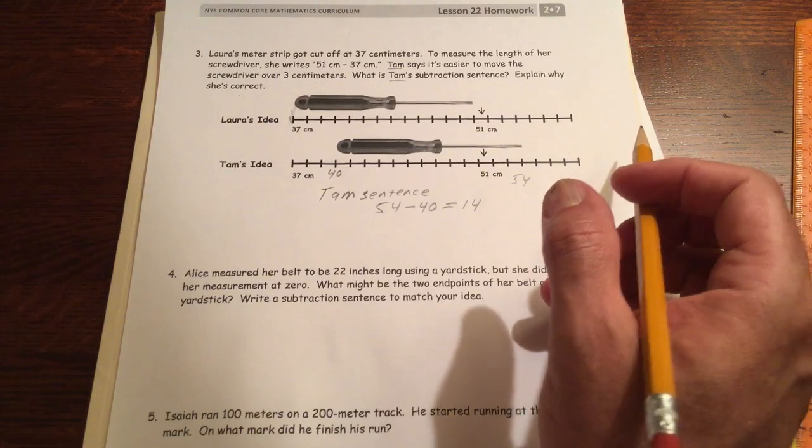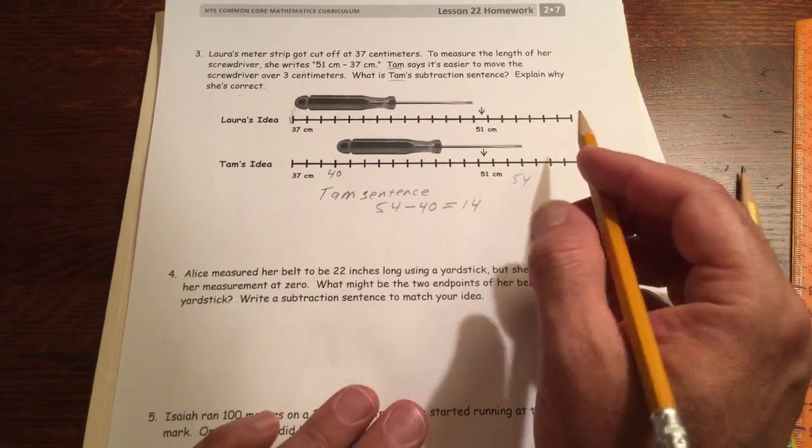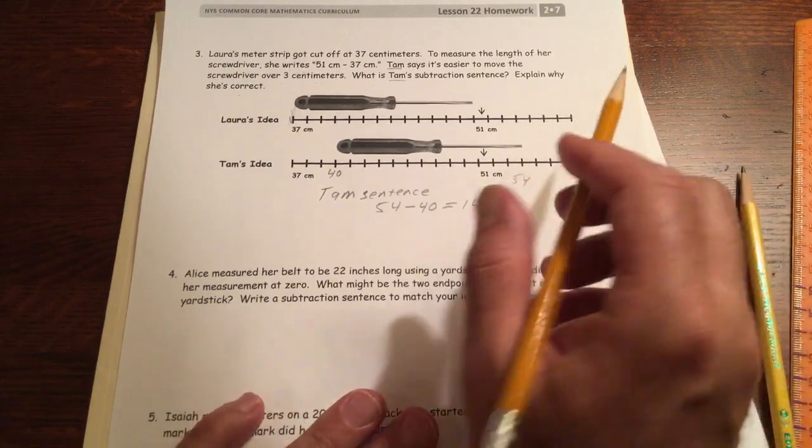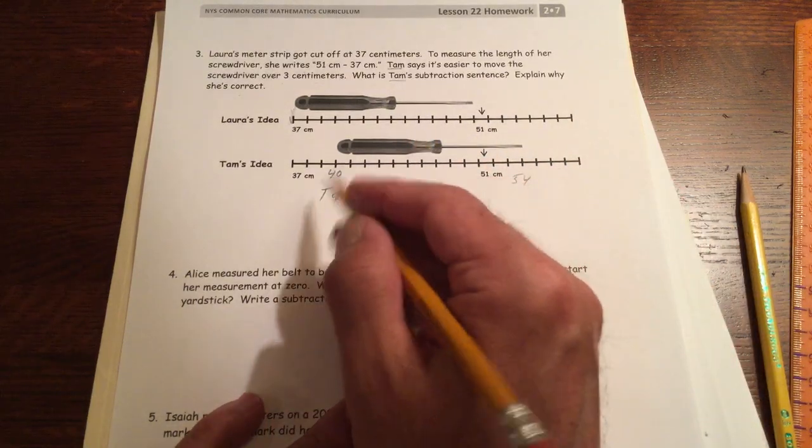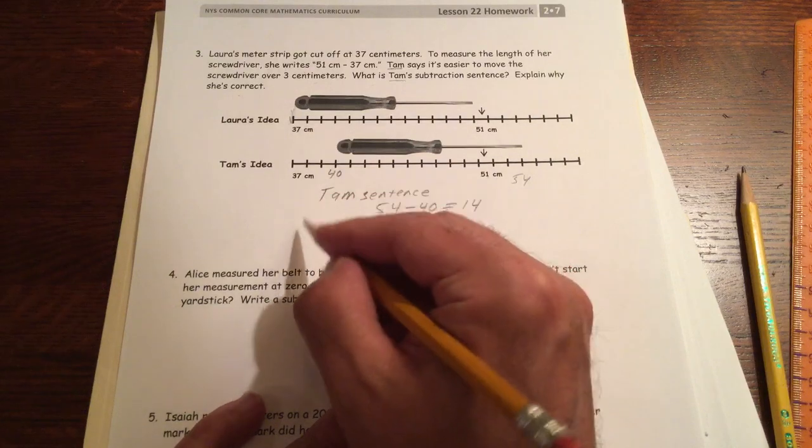This is just like the tape diagram subtraction method. The idea is, if you add the same to both numbers, you get easier numbers to subtract. So just write that.